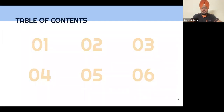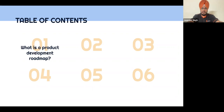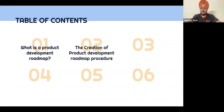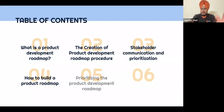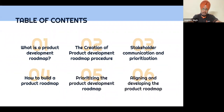In this session we are going to discuss a few things: first, what is the product development roadmap; second, the creation of the product development roadmap; third, stakeholder alignment and the communication process; how to build the roadmap; the prioritization of the product development roadmap; and last but not least, aligning and developing the product roadmap.